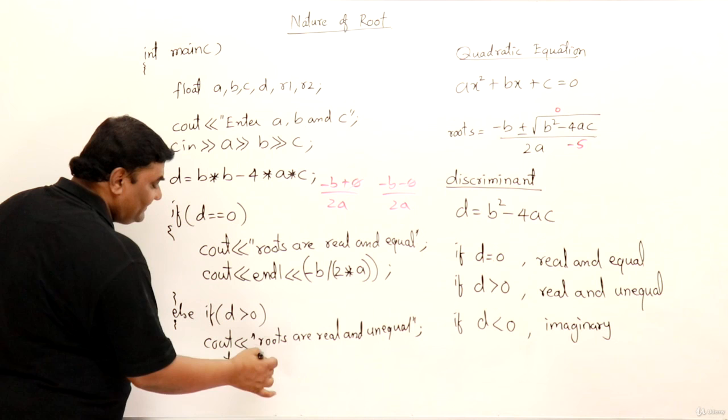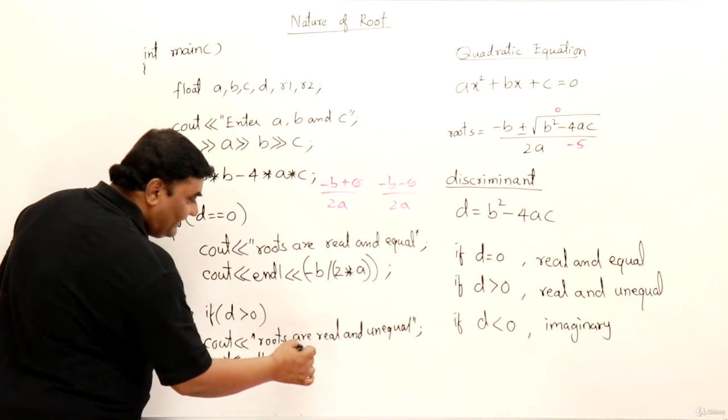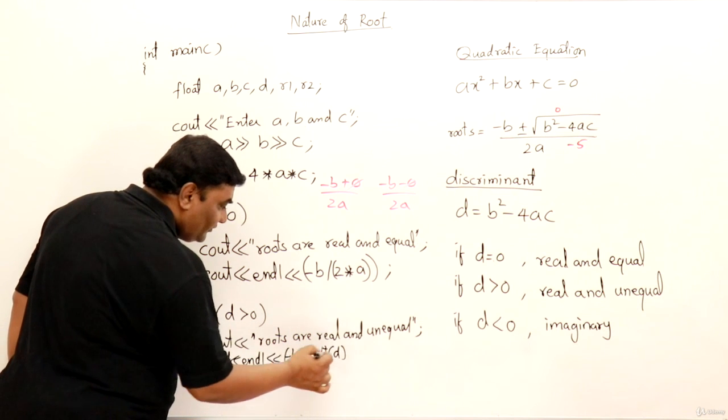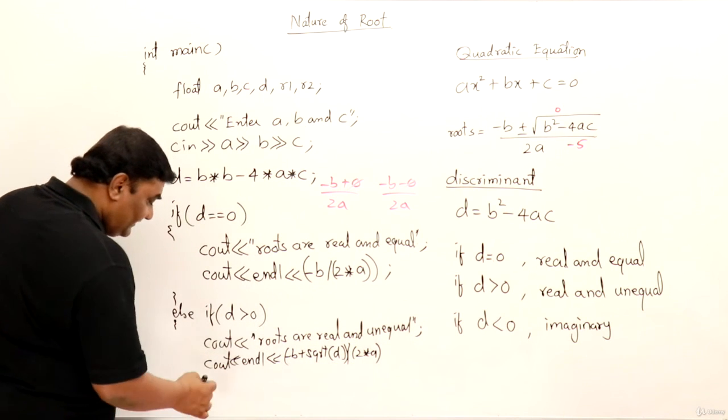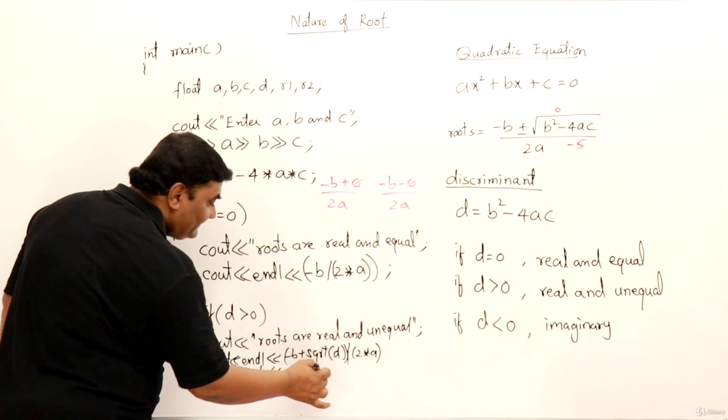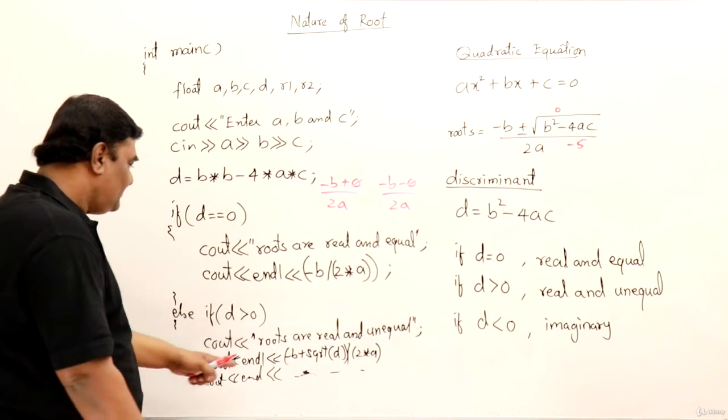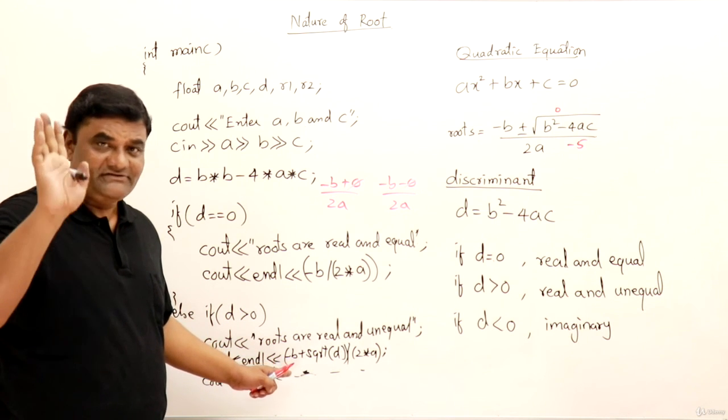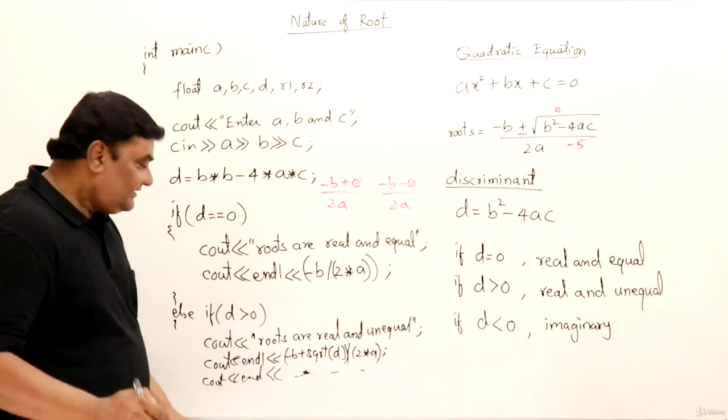So first is endl, I will display it in a new line. Then first root is what? Minus b plus sqrt of d, then this whole thing divided by 2 into a. This is one result. Then again c out endl, this whole thing as it is, just write minus here. Right? So this is for positive and this for negative. I don't have to write this completely. Already we have done it in the previous video, in the beginning videos. So that same formula you can write here.